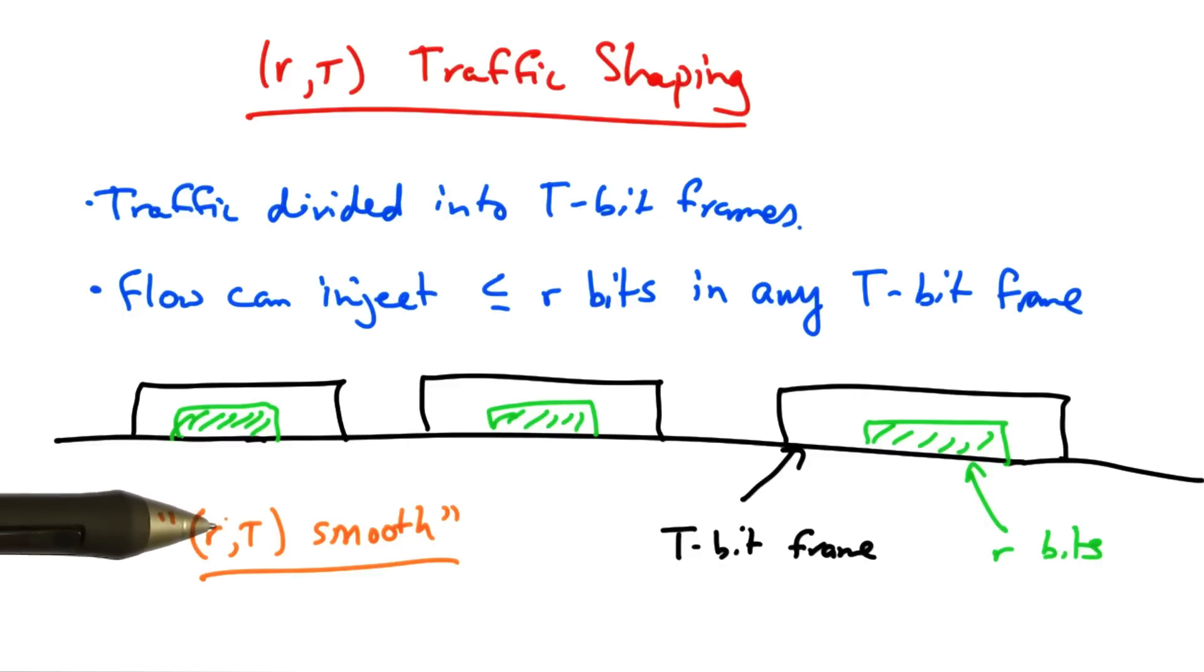The RT traffic shaper is slightly relaxed from a simple leaky bucket, because rather than sending one packet every time unit, the flow can send a certain number of bits every time unit.